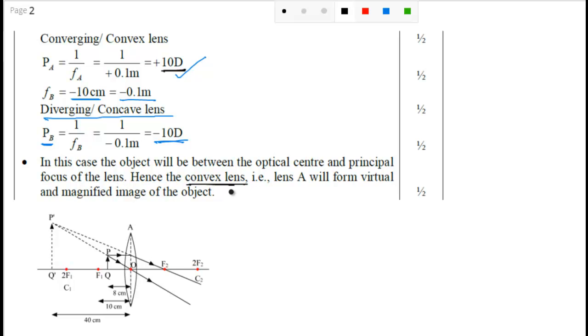And you can see here also that your object is in between optical center and principal focus of the lens. That means your convex lens will form virtual and magnified image of the object. So for that you will get half marks and you draw this diagram.